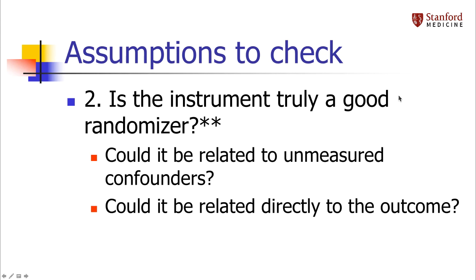A much harder assumption to prove is that the instrument is actually a good randomizer — that it's not related to confounders and not in any way directly related to the outcome. You can check for balance in measured confounders between your instrument groups, but because unmeasured confounders are unmeasured, there's no way to check that those are balanced. You can only argue for balance in unmeasured confounders on theoretical grounds. This is the sticky point for instrumental variable analysis.